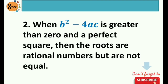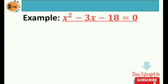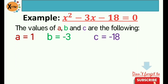Number 2: when b squared minus 4ac is greater than 0 and a perfect square, then the roots are rational numbers but are not equal. When I say rational numbers, these are numbers that can be expressed as simple fractions. Example: the first thing we need to do is identify the values of a, b, and c. So a is positive 1, b is negative 3, and c is negative 18.